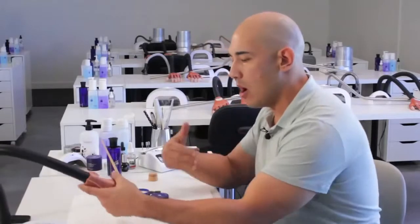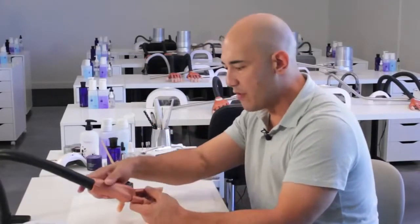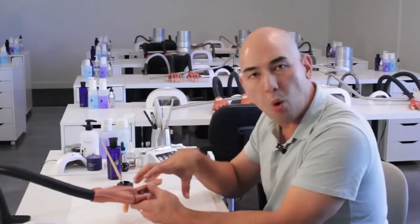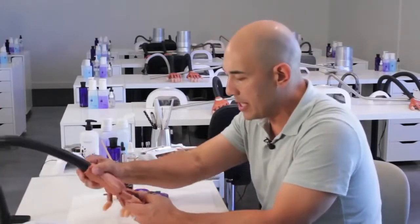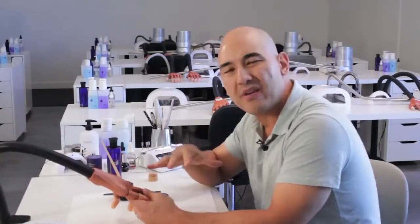The key to successful reverse application is allowing the product to work with you, not against you. And what I mean by that is you have to let gravity help you. So we want to be able to keep the finger pointed down towards the towel. If you have the finger up like this, the product has nowhere to go but down towards the cuticle area and the growth channels. We want to be able to keep it down, maybe between a 30 and 45 degree angle.